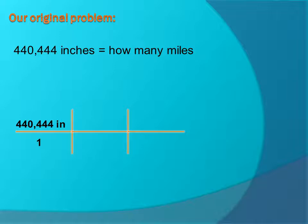Remember, for every 1 foot, there's 12 inches. So we'll put 12 inches on the bottom so they can cancel each other out, and 1 foot on the top. So there, our inches cancel each other out. So we're going to do 440,444 divided by 12 to get to feet.